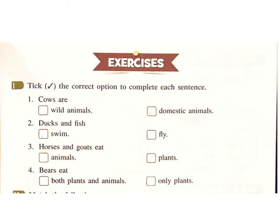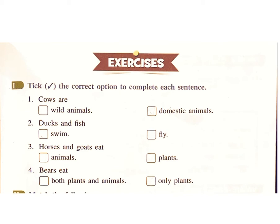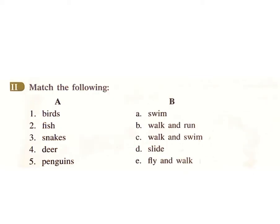Pick the correct option to complete each sentence. 1. Cows are — wild animals or domestic animals. Answer: Domestic animals. 2. Ducks and fish — swim or fly. Answer: Swim. 3. Horses and goats eat — animals or plants. Answer: Plants. 4. Bears eat — both plants and animals or only plants. Answer: Both plants and animals.